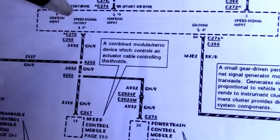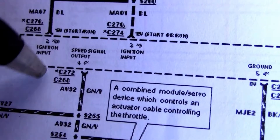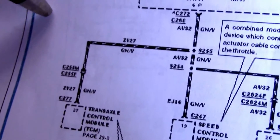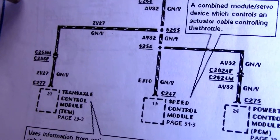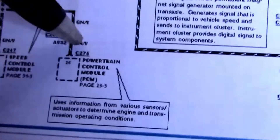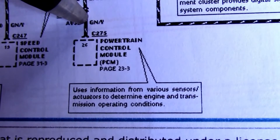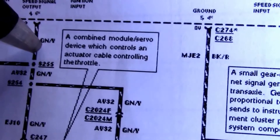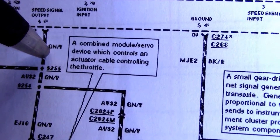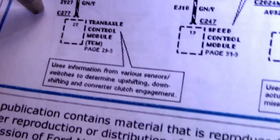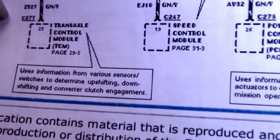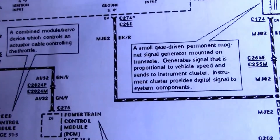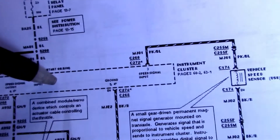So the speed signal out on pin 4 goes to the transfer case control module, TCM, speed control module, and the powertrain control module. It tells you a little about how the PCM and TCM use this signal. But basically how the system works — it doesn't tell you exactly what type of job the instrument cluster does internally. I was trying to find that information and couldn't.